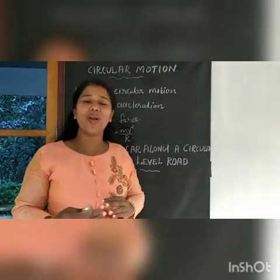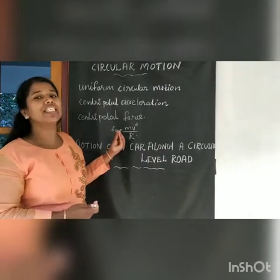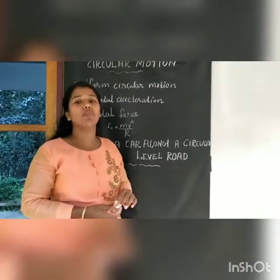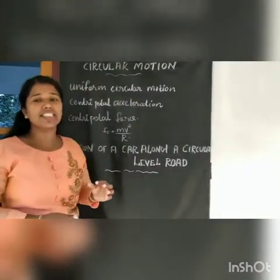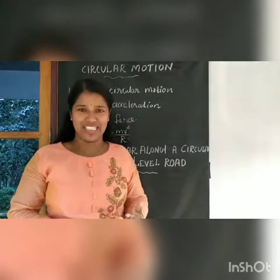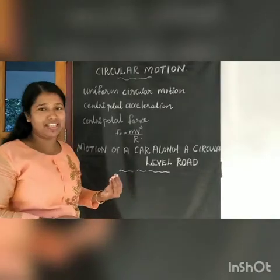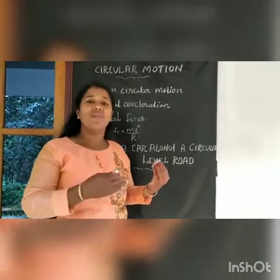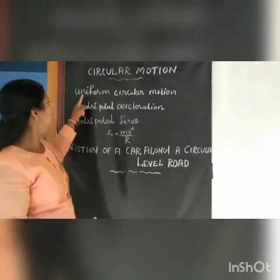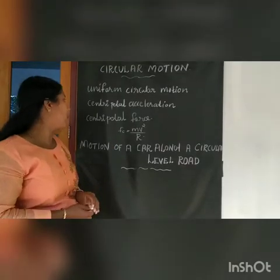In uniform circular motion, a body moves along a circular path with constant speed. Speed is constant, that is known as uniform circular motion. In this case, velocity changes continuously — the direction changes continuously — which means it is accelerated motion.